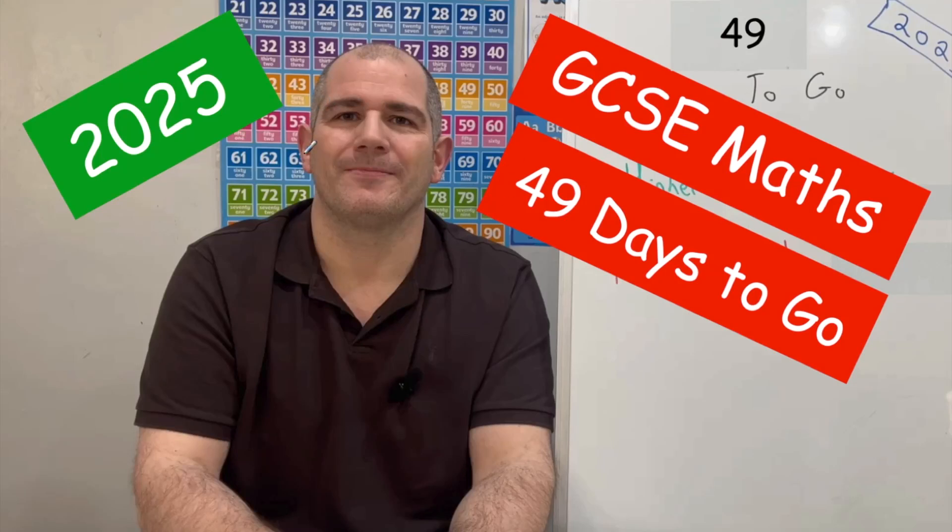Hi everyone, welcome to the Corbettmaths 100 Days to Go Revision Sessions 2025. There's 49 days to go to your first GCSE Maths exam - that's 7 weeks exactly. We're getting close, so keep up the hard work. You've done fantastically well.